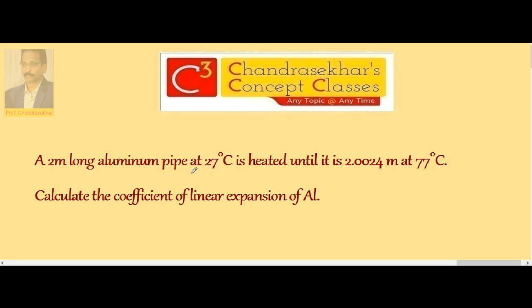A 2 meter long aluminum pipe at 27 degrees centigrade is heated until it is 2.0024 meter at 77 degrees centigrade. Calculate the coefficient of linear expansion of aluminum.